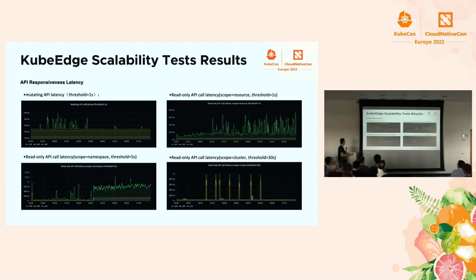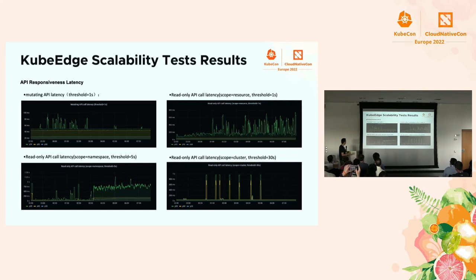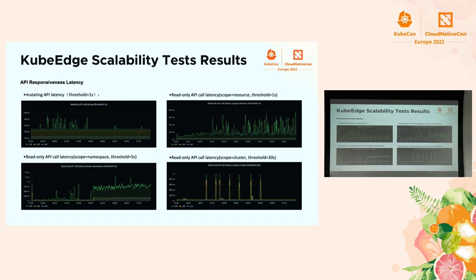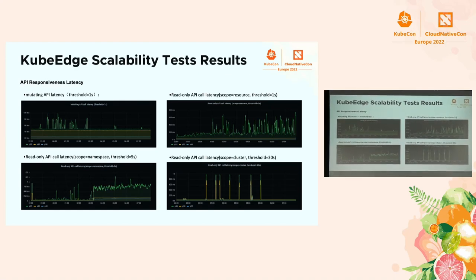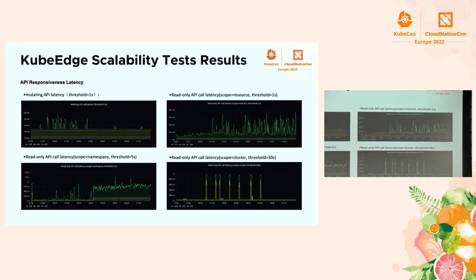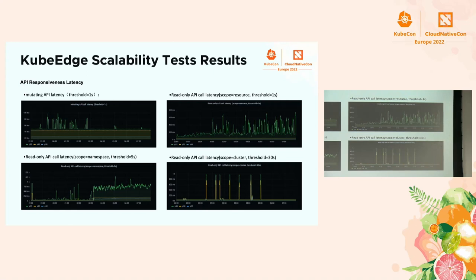The test results are very impressive. For mutating API latencies, with a threshold of one second, the 50th and 90th percentiles are almost flat — we only have some spikes at the 99th percentile. For read-only API calls, the 50th and 90th percentiles remain steady. The read-only API call latencies at the 50th and 90th percentiles are both steady, with only a few spikes — very satisfying results.